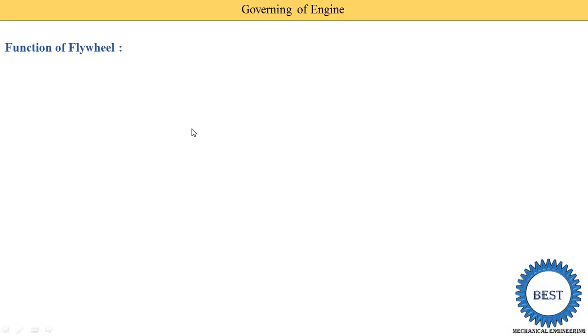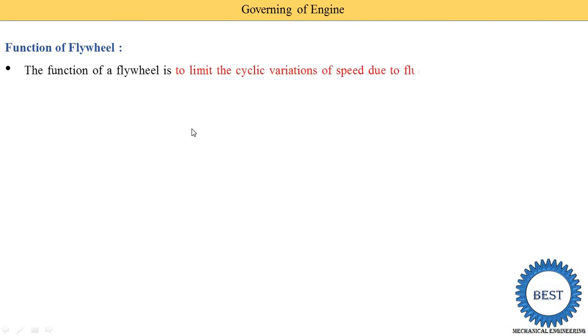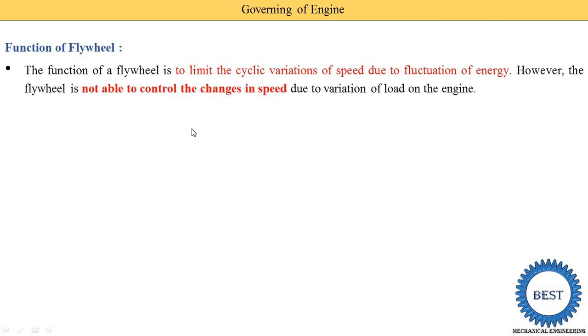First, we understand what is the flywheel and what is the function of the flywheel. The flywheel is a mechanical component in which we store energy or retrieve the energy whenever we require it. During the power stroke, the flywheel stores some energy and it supplies energy during the suction stroke, compression stroke, and exhaust stroke. So the function of the flywheel is to limit the cyclic variation of speed due to fluctuation of energy.